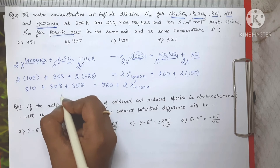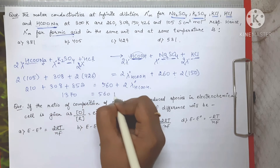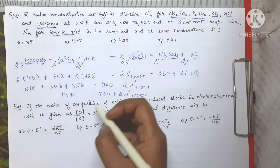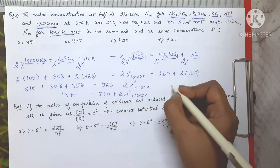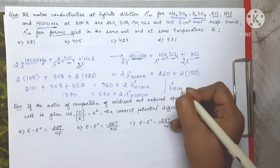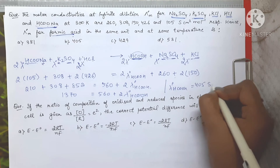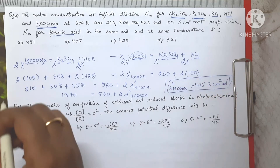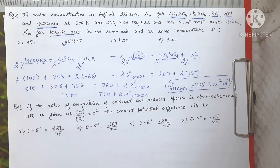Summing up: 1370 = 560 + 2 × λ°(HCOOH). So 2 × λ°(HCOOH) = 1370 − 560 = 810, giving λ°(HCOOH) = 405 S cm² mol⁻¹. This is the answer, and the correct option is Option B. Now we move on to the second question.